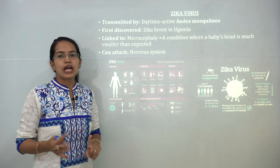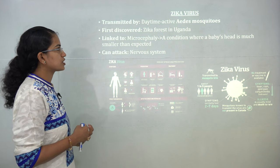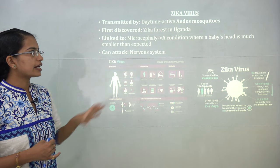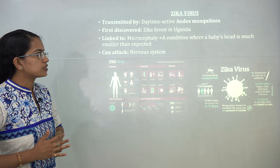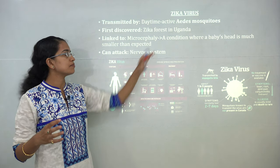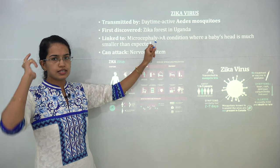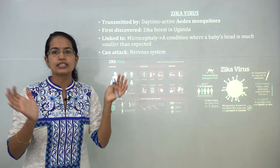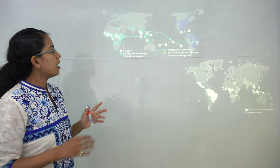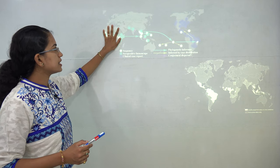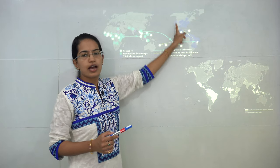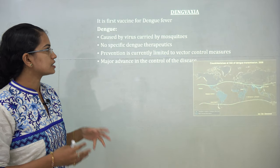The next topic is Zika virus. It is caused by the bite of a mosquito and was first discovered in the Zika forest in Uganda, hence its name. It is a variant transmitted by the daytime Aedes mosquito. It is linked to microcephaly — meaning the baby's head or brain growth is smaller than expected. It also affects the nervous system. The virus originated predominantly in Africa and has spread to Southeast Asia, various island groups, and parts of America.